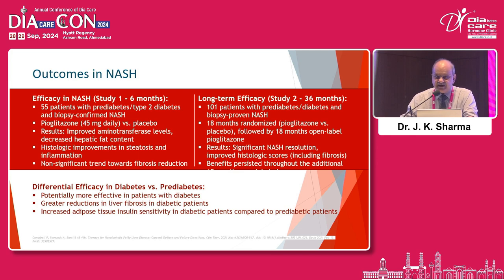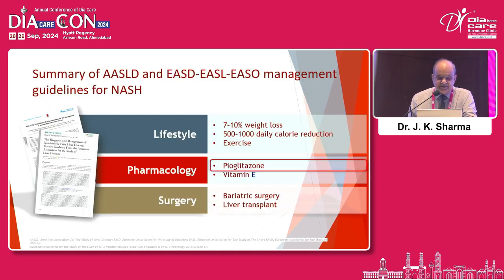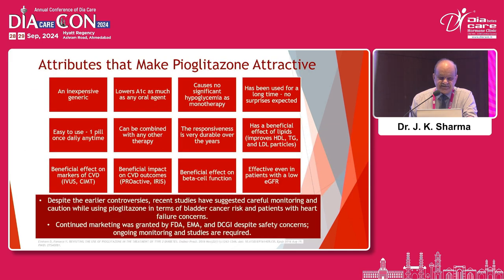When using pioglitazone for NASH, regular follow-up is required and careful attention to fluid retention is needed. The ASLD, EASL, and EASO management guidelines for NASH recommend lifestyle modification — 7 to 10% weight loss, 500 to 1,000 daily calorie reduction and exercise — followed by pharmacology with pioglitazone and vitamin E. Vitamin E comes after pioglitazone, then bariatric surgery and liver transplant.